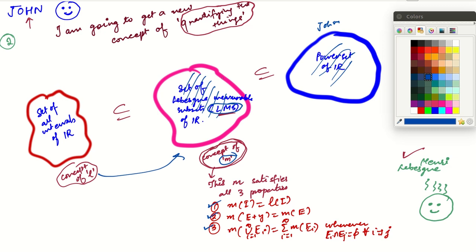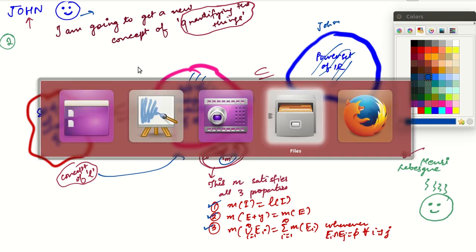John wanted M for all subsets of R, that is for the power set of R, but Henry told him he cannot give a concept of M on that bigger set satisfying all the required properties. He can only give M on this smaller set — the Lebesgue measurable subsets. John was happy and is now asking Henry to teach him these things.